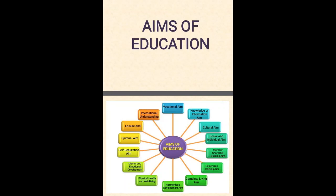Next we will discuss about philosophy. What do you think about philosophy? The word philosophy is derived from the Greek words 'philos' and 'sophia'. Philos means loving. Sophia means wisdom. And it means love of knowledge and wisdom. Write down now the definitions. Philosophy is a science of sciences. Philosophy is the science of knowledge. You can get more definitions in the book — refer the book also.